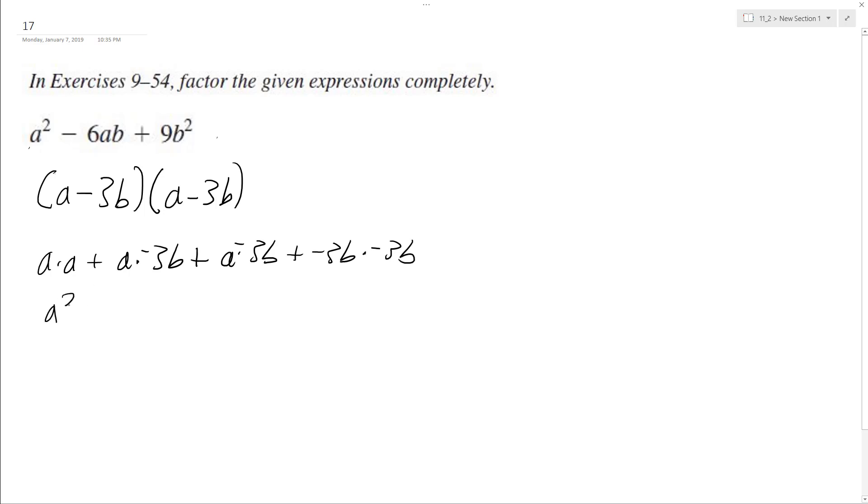Okay, so we end up with a squared, minus 3ab, minus 3ab. And here we got a negative times a negative, we get positive 3b squared. So we end up with a squared, minus 6ab, plus 3b squared.